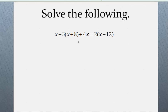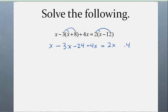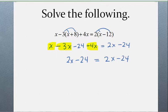One more: x minus 3 times the quantity x plus 8, plus 4x, equals 2 times the quantity x minus 12. I'll be careful here — I'm just distributing the negative 3 on the left, and distributing the 2 on the right. So I get x minus 3x minus 24 plus 4x on the left, and 2x minus 24 on the right. Combining like terms: I've got x, minus 3x, and plus 4x — that is 2x — and still minus 24. So the left side is 2x minus 24, and the right side is 2x minus 24. Those are absolutely identical, which means this equation is an identity.